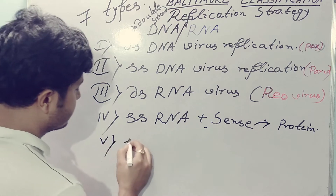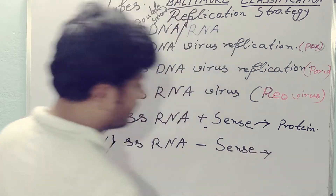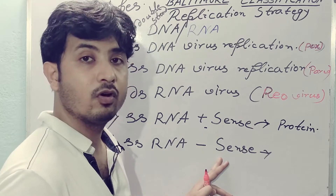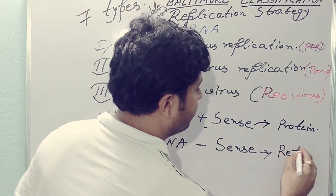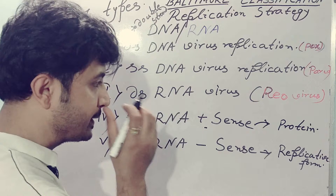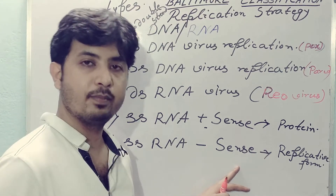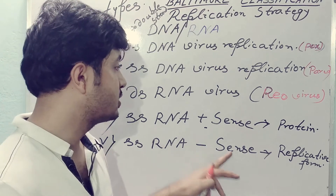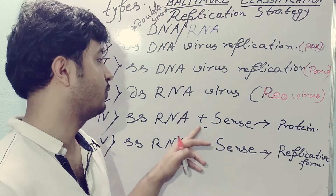The fifth class is single-stranded RNA also, but it is negative sense. Here the RNA virus genome cannot be read directly as an mRNA, so it has to form a replicative form. This RNA cannot be directly read as an mRNA to form protein — first it has to go through a replicative form where it makes copies from negative sense to positive sense of the genome, and then it can be read as mRNA to produce protein. That step is saved in the case of positive sense RNA viruses.